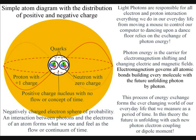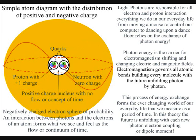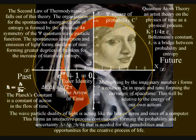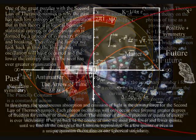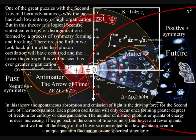CPT symmetry is also broken by the second law of thermodynamics, with a continuous increase in statistical entropy or disorganization. One of the great puzzles with the second law of thermodynamics is why the past has such low entropy or high organization. But in this theory it is logical because statistical entropy or disorganization is formed by a process of symmetry forming and breaking.